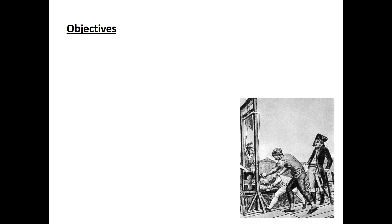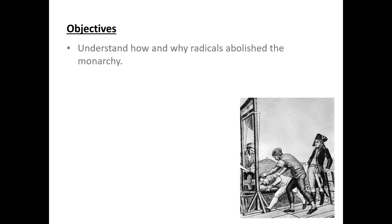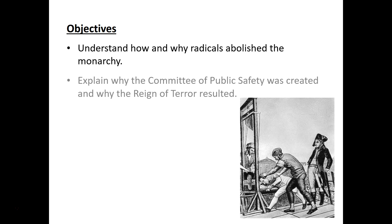Our objectives in this section. First, we'll talk about how and why the radicals in control of the national legislature — which had been, remember, the National Assembly — decided to take it one step further and abolish the monarchy. We'll look at why the very inappropriately named Committee of Public Safety was created and the result of that, being the Reign of Terror.